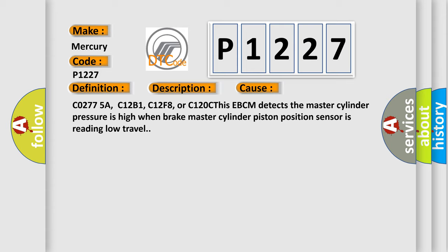C0277SA, C12B1, C12F8, or C120C. This EBCM detects the master cylinder pressure is high when brake master cylinder piston position sensor is reading low travel.